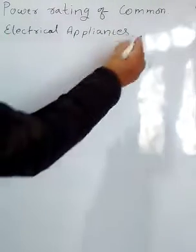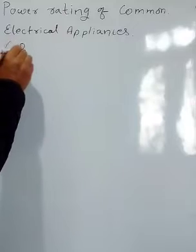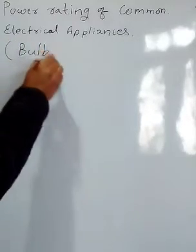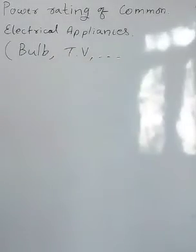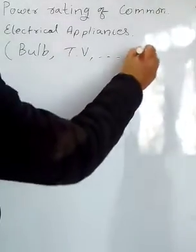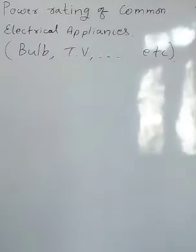Power rating of common electrical appliances. Electrical appliances include electric bulbs, televisions, refrigerators, geysers, fans, etc. These are called electrical appliances.